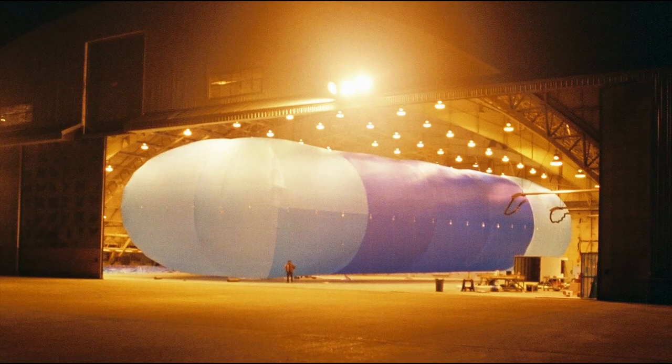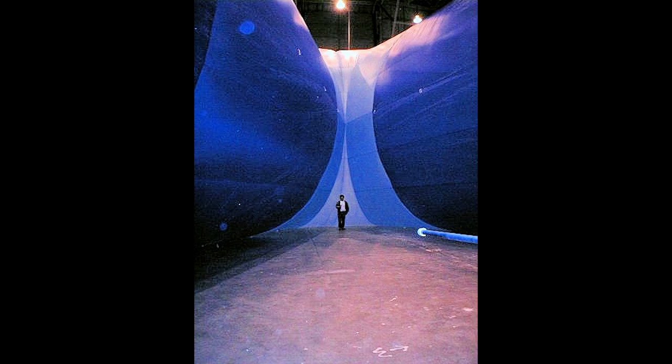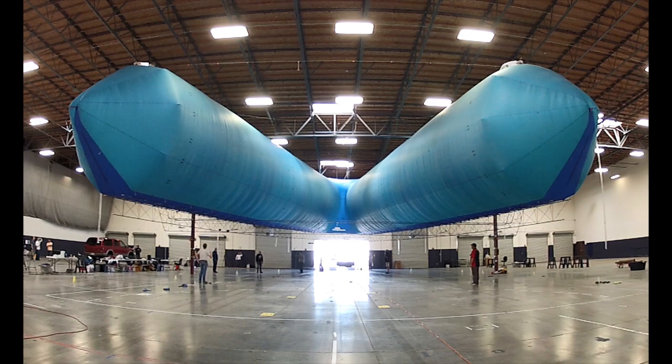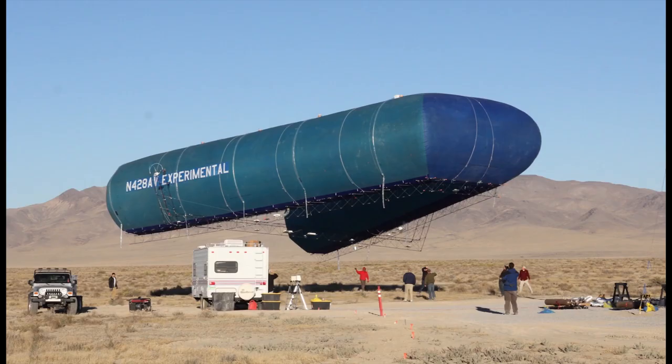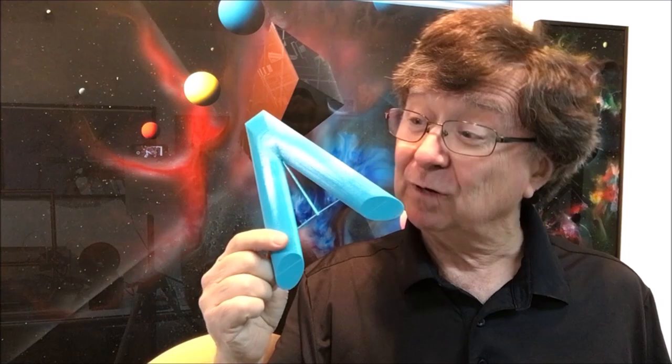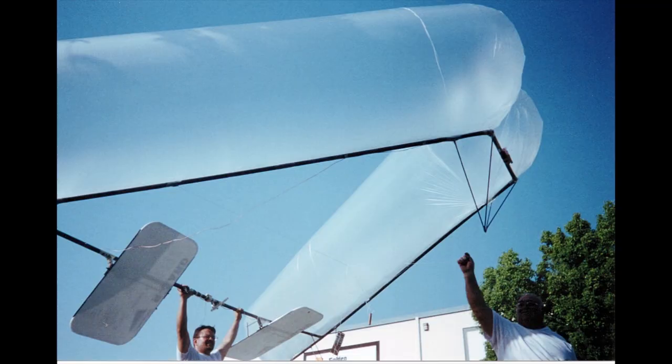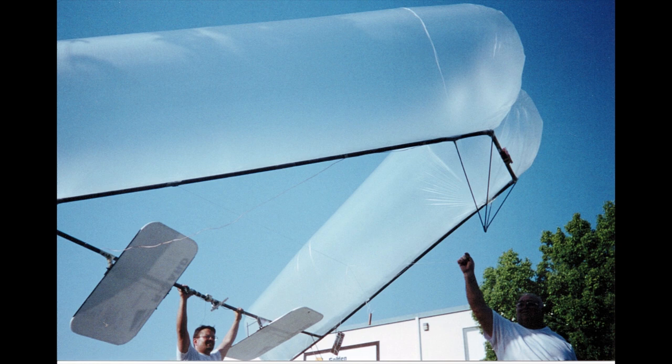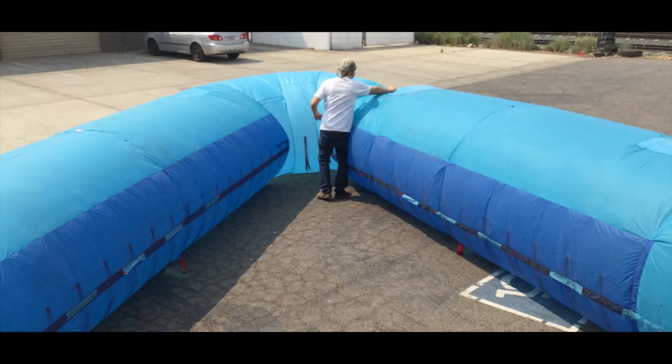Sometimes we build big airships. This is the Ascender 175. It was a little bigger than a 747. Sometimes medium airships. This is the Ascender 9, in the hangar, at launch, and high in the sky. Sometimes we build little airships. This is Ascender 0.1 and the 18-foot Ascender 18.